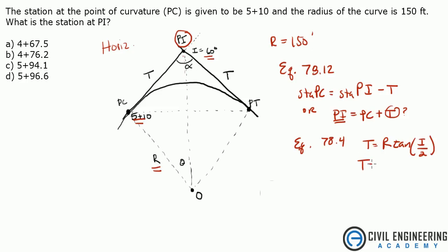So, if I solve for that, T is going to equal 150 feet times the tangent of 60 over 2. And that gives me 86.60.